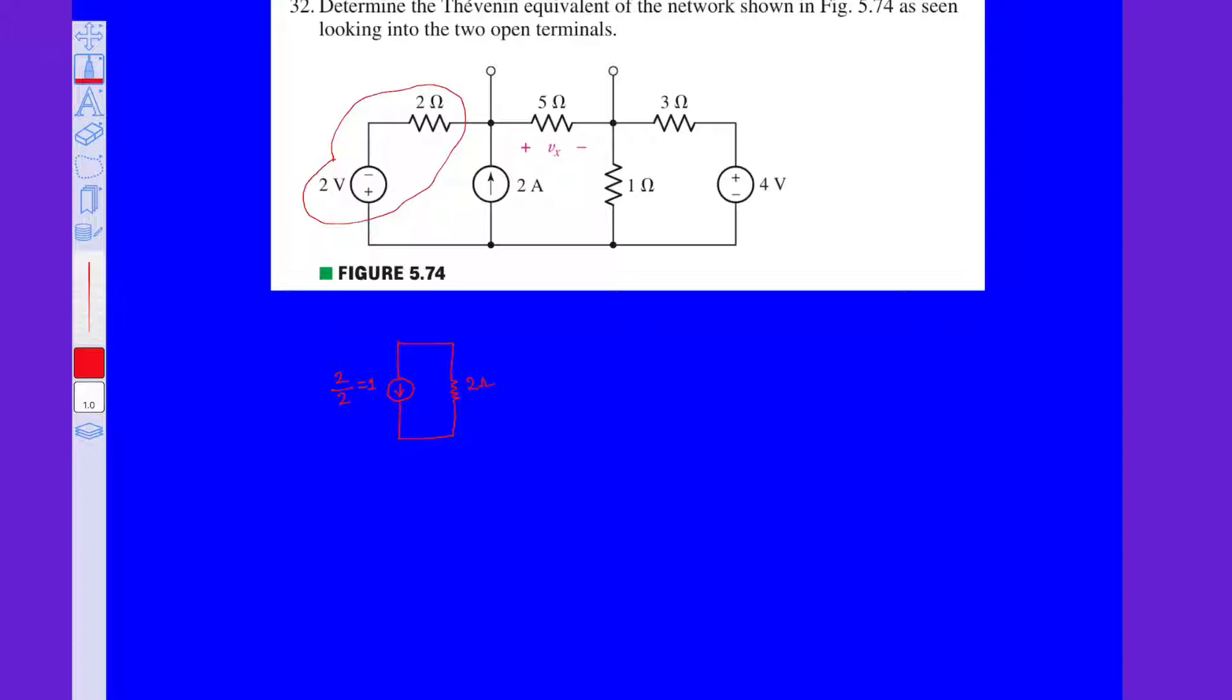The current flowing towards downwards because the plus indication of the voltage source is downwards. Here one more current source is there which equals 2 amps at 5 ohms. These are the terminals. This is the 1 ohm resistor and this is the 3 ohm resistor and this is the 4 volt voltage source.